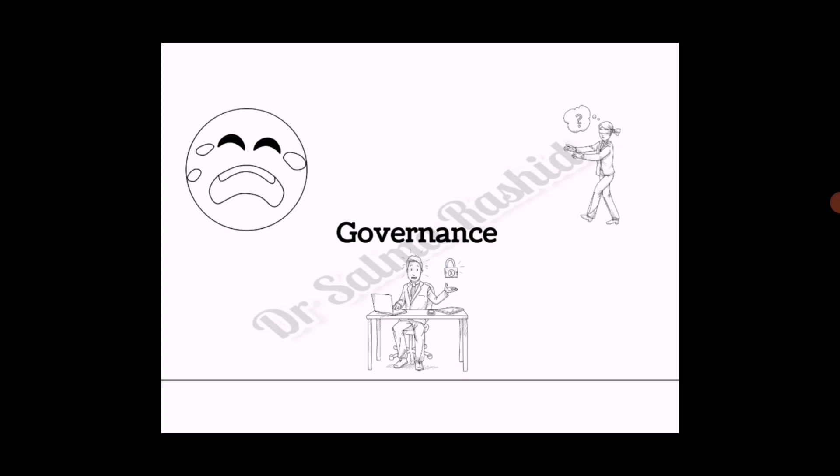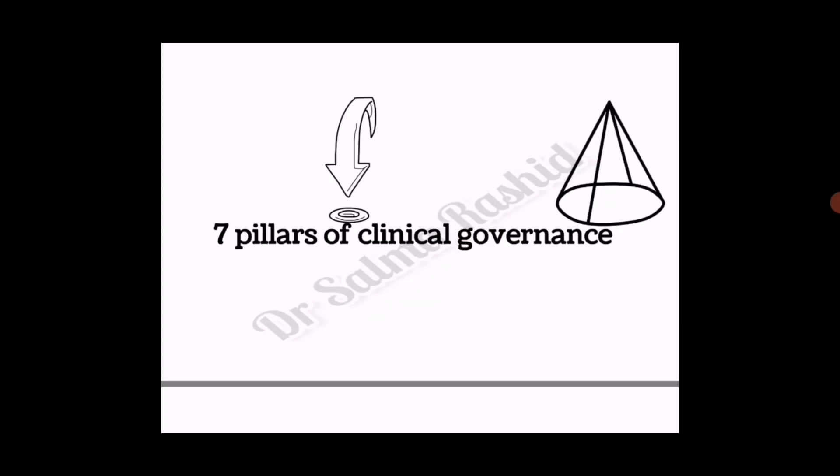There are seven pillars of clinical governance: clinical effectiveness and research, audit, risk management, and education and training. These four are more important and you can remember this by the mnemonic CARE. Others are patient and public involvement, using information and IT, and staffing and staff management. You can remember all seven pillars with the mnemonic PIRATES.